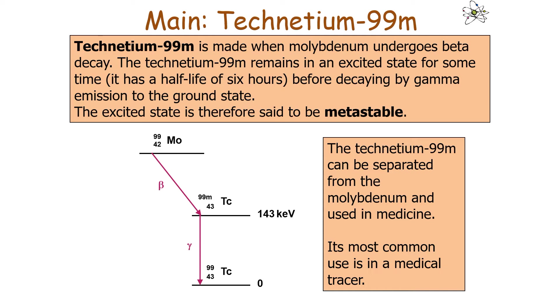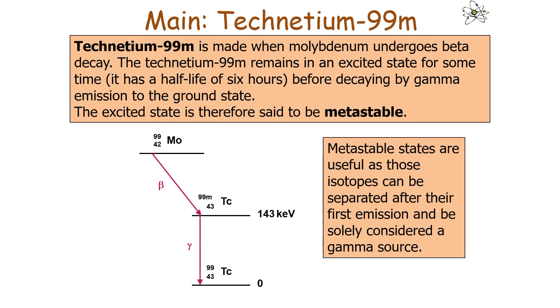This technetium can be separated from the molybdenum and used in medicine, with its most common use in a medical tracer. Metastable states are useful as those isotopes can be separated after their first emission and then can be solely considered a gamma source. Gamma emission can only happen after either alpha or beta decay, so if you don't want those products to be produced, you would have your metastable substance to be used as your gamma source.